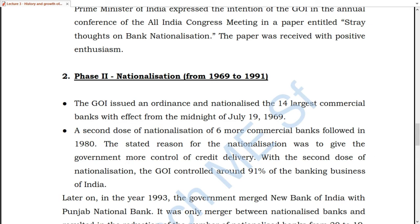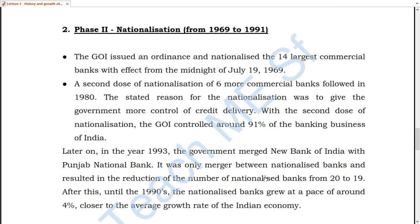The basic purpose of nationalization was that the government's control would be better, the banks' functioning would improve, and the government could handle the financials and monitor the economy as needed. At this time, the government of India had 91% control of the banking business, and the total number of banks was 19.